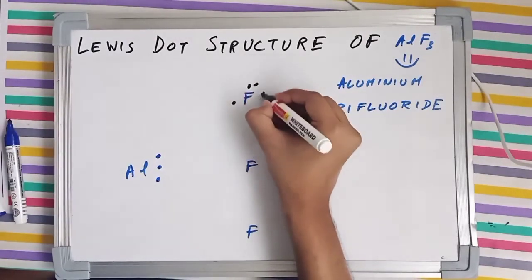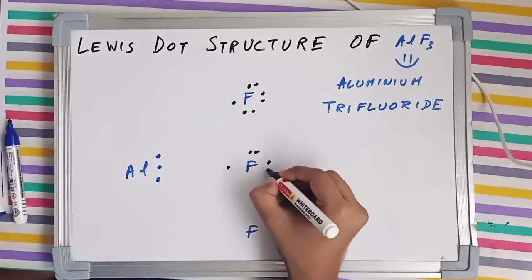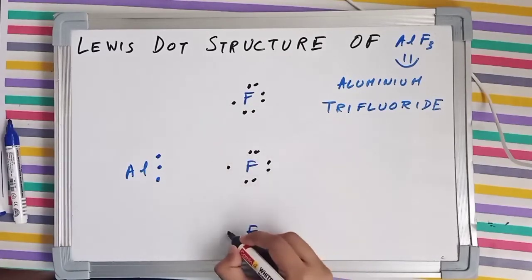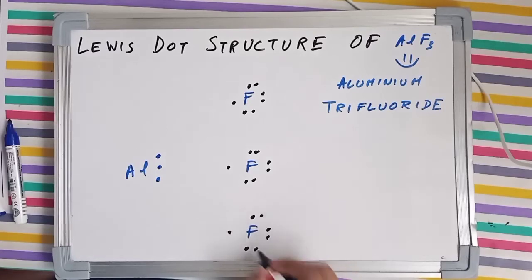So 1, 2, 3, 4, 5, 6, 7 for the first fluorine. 1, 2, 3, 4, 5, 6, 7 for the second. And 1, 2, 3, 4, 5, 6, 7 for the third.